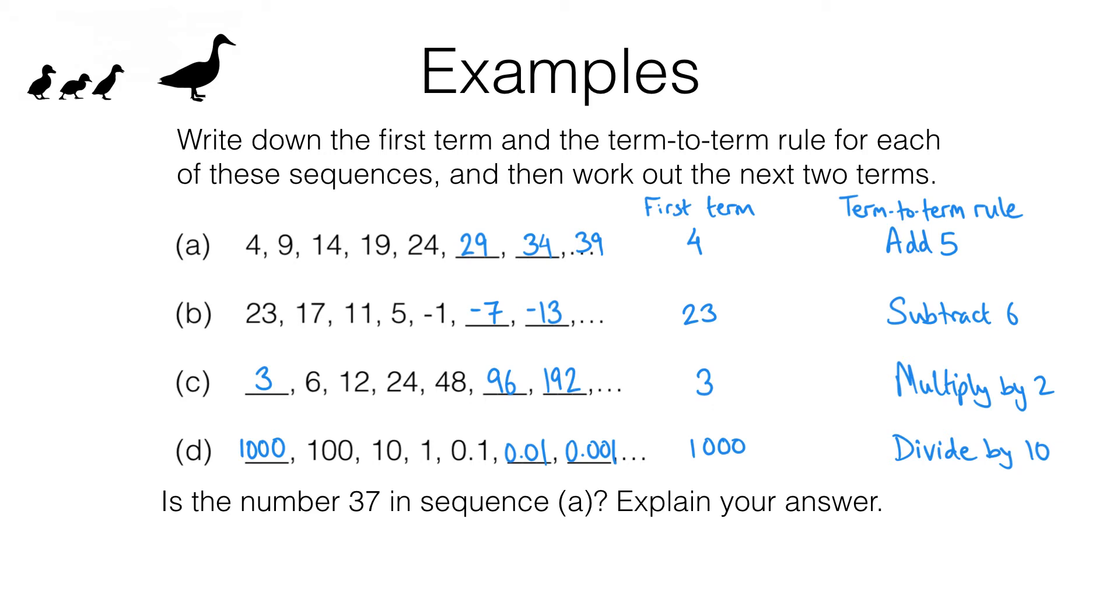However that's not a good method in general because I could change the question and ask is the number 837 in the sequence, and it would be a real pain to keep listing out the terms of this sequence until we get somewhere near 837 to see if it actually turns up in the sequence or we end up skipping over it. So here's a much better way of thinking about these kinds of questions. Notice this sequence is going up in steps of 5. That means it's a bit like the 5 times table. Except because we didn't start off at 5 it's not exactly like the 5 times table, and in fact you should notice that each term in this sequence is 1 less than a multiple of 5. 4 is 1 less than 5, 9 is 1 less than 10, 14 is 1 less than 15 and so on.